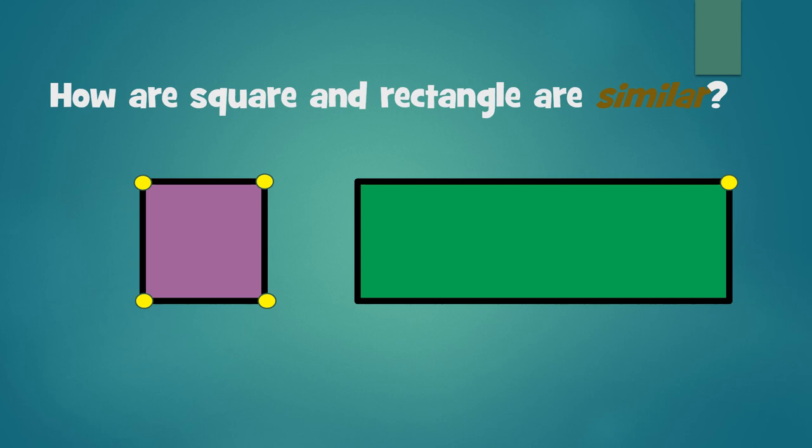Well, for a rectangle, it has one, two, three, four corners. So, it also has four corners. So, how are they similar? Both shapes have four corners.